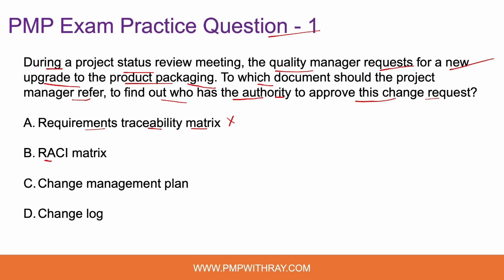Option B: RACI matrix. If you know the RACI matrix, it's a matrix which talks about how tasks will be allocated in a project. R is the responsible person, A is the approver, C is the person you need to consult, and I is the person you need to keep informed. Please study the RACI matrix from your PMBOK 7th edition or the process group practice guide — it's very important for your PMP exam. You might say that RACI could be a potential option because it identifies who approves a change request. So let's hold this for now.